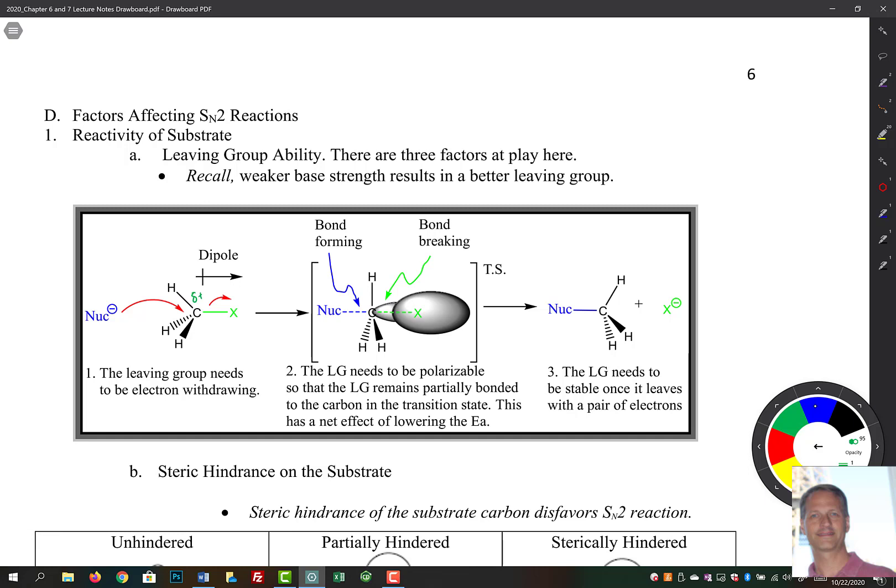The second thing that happens is we enter this transition state. As we come in here, that leaving group needs to be polarizable. And that allows the leaving group to be partially bonded to the carbon in that transition state. The net effect of this is that it lowers the activation energy.